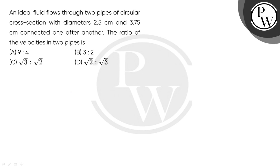The ideal fluid flows through two pipes of circular section. The diameter is 2.5 cm and the other diameter is 3.75 cm. The pipes are connected one after another. The ratio of the velocities in two pipes.